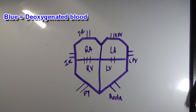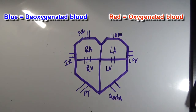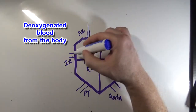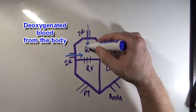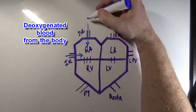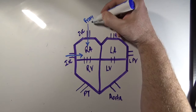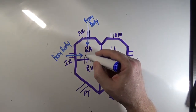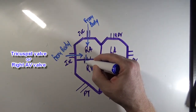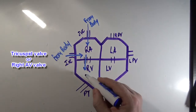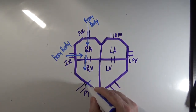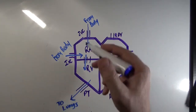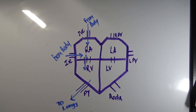The blue pen will represent deoxygenated blood and the red pen will represent oxygenated blood. Deoxygenated blood from the body is going to come to and collect in the right atrium. Blood passes from the right atrium to the right ventricle through the tricuspid valve, then exits the right ventricle through the pulmonary trunk to go to the lungs to pick up oxygen. This is how blood flows through the right side of the heart.